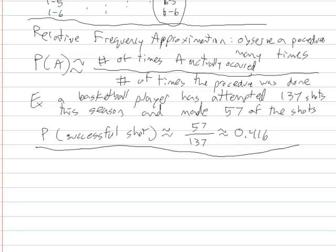And then a third type of really roughly estimating probability is subjective probabilities.